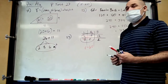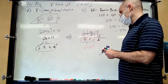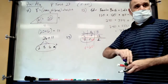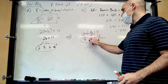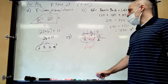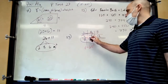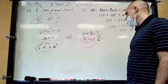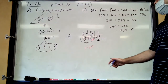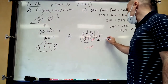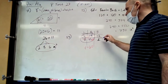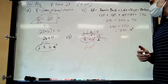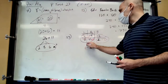Now that we know r equals 20, we can find s. We could do 12 times 20 divided by 15, or still use the proportion 6 over 8 equals 12 over s. So s equals 16. You guys okay with number 13?